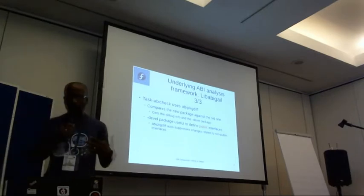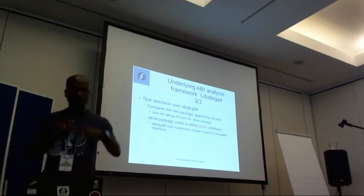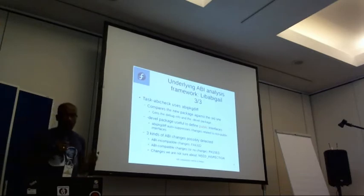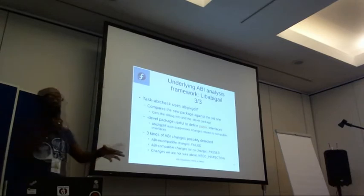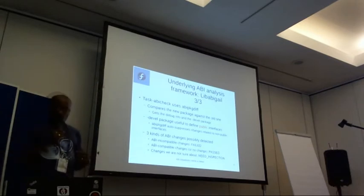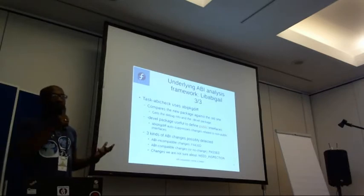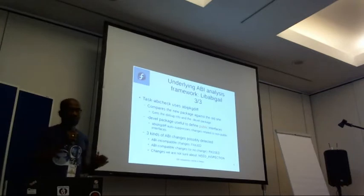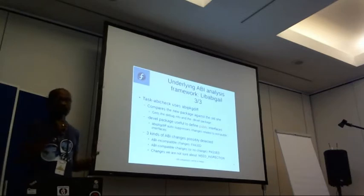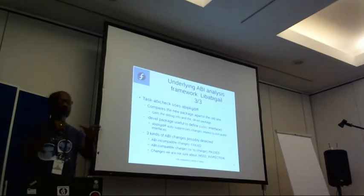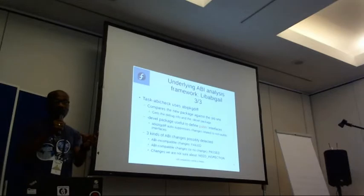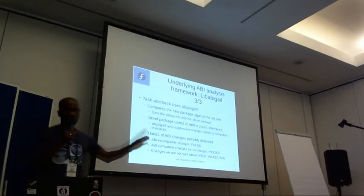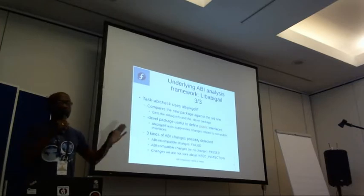ABI comparison is a gray area kind of thing — we cannot always say if an ABI change is good or bad. There are some that are clearly bad, like a public function disappearing, or a return type of a function changing completely; we flag those and the test status is 'failed.' But there are other changes that are harder to judge.